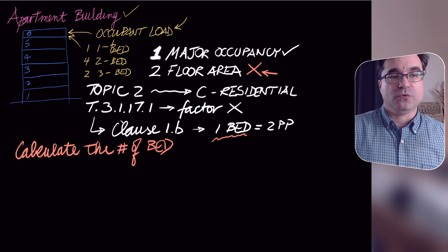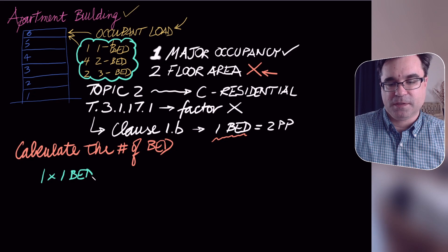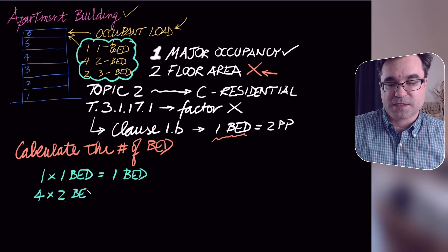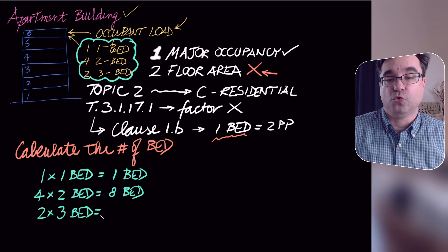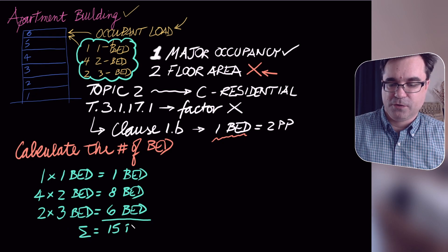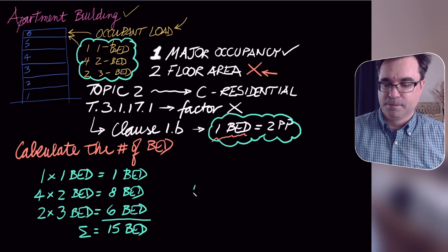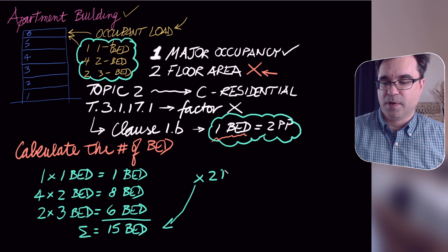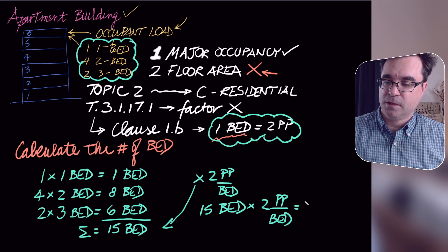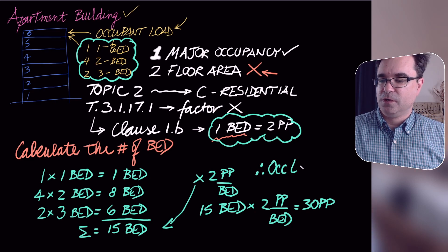We calculate the number of bedrooms from the given information: one one-bedroom apartment equals 1 bedroom; four two-bedroom apartments equals 8 bedrooms; two three-bedroom apartments equals 6 bedrooms. Adding these up: 15 bedrooms total. Applying Clause 1b: 15 bedrooms × 2 people per bedroom = 30 people.